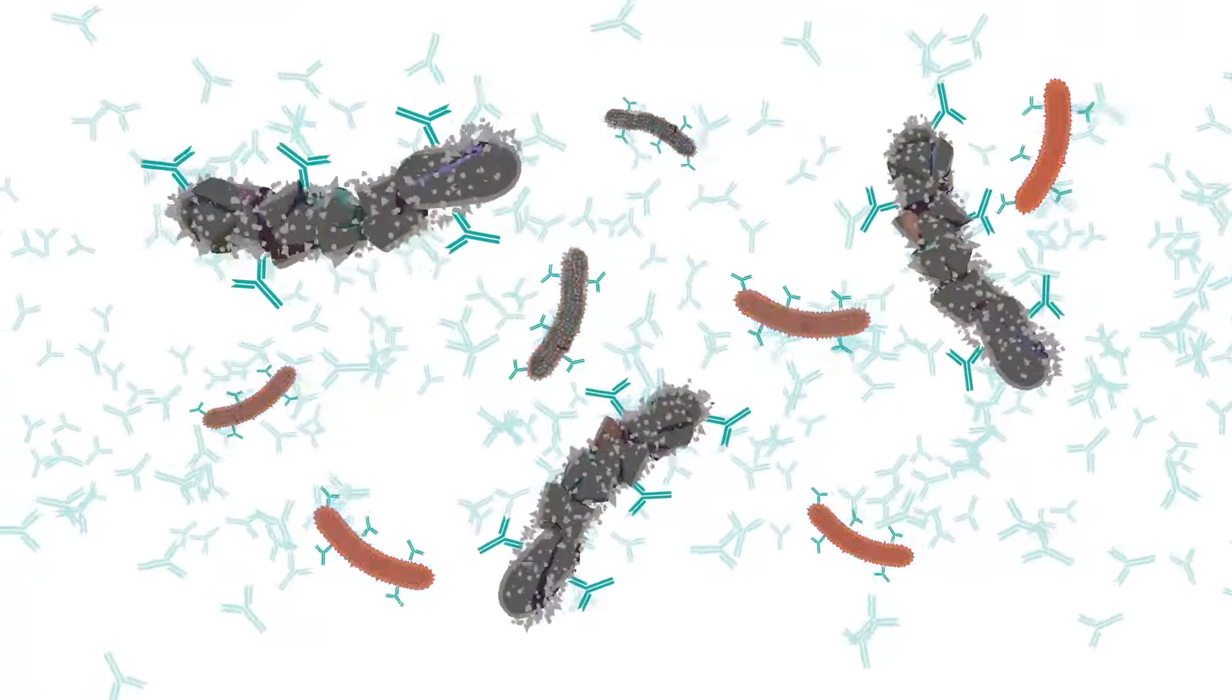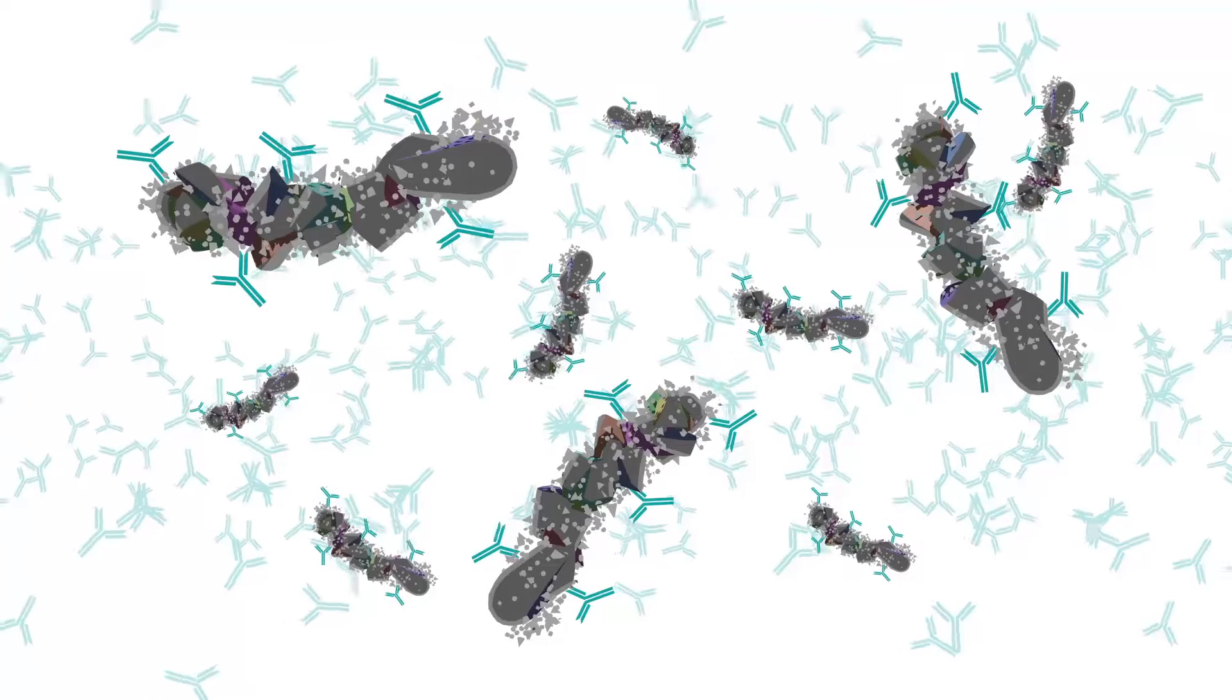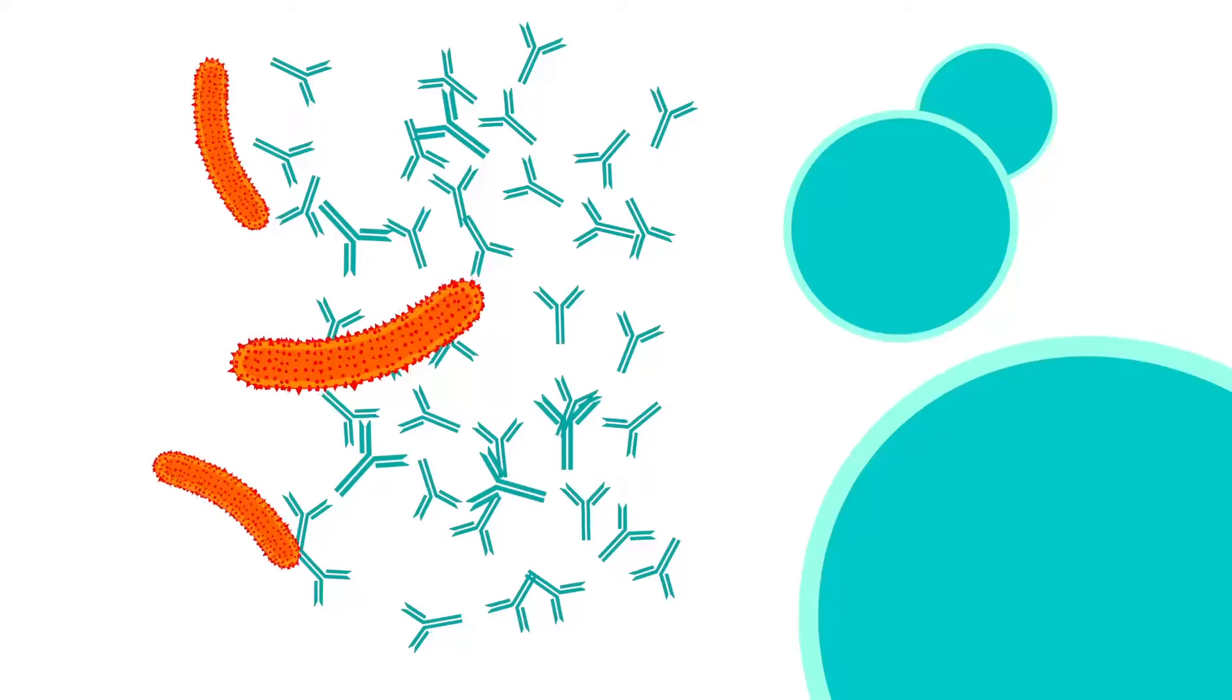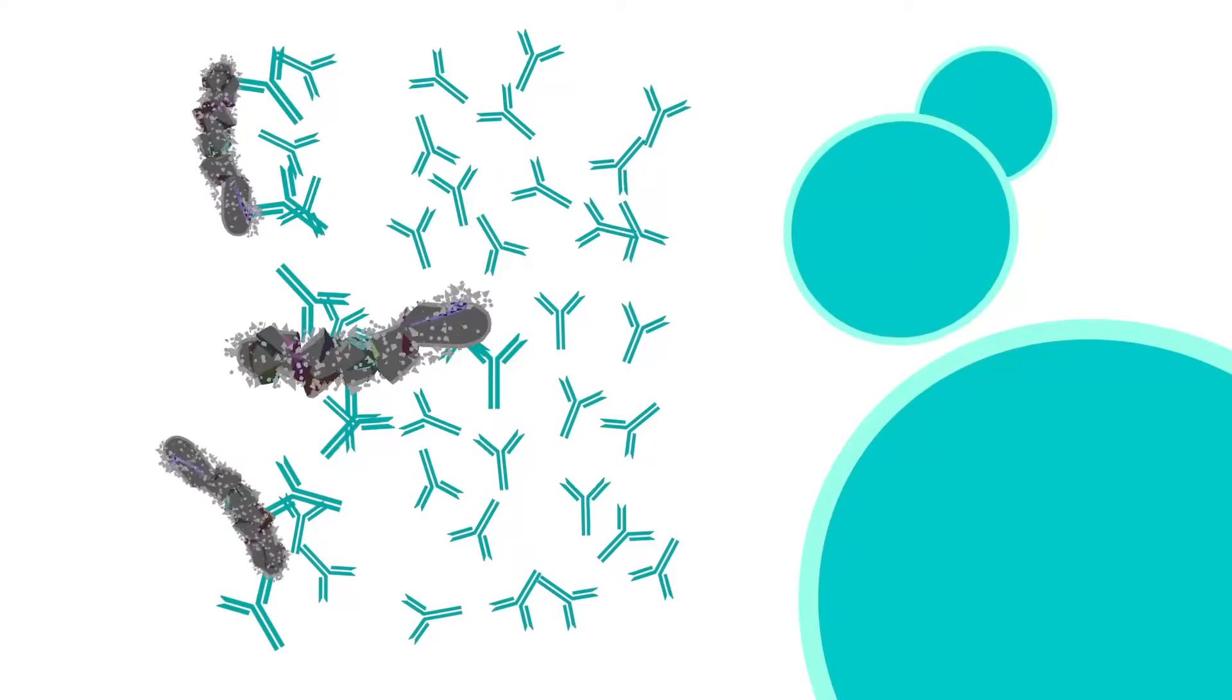Eventually, your body gets rid of all the bacteria, and you recover. Antibodies remain in the blood, and some white blood cells may also become memory cells. If those specific bacteria invade the body again, the immune system will respond so quickly that you won't get ill.